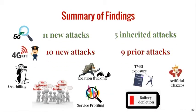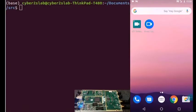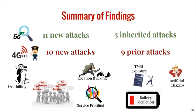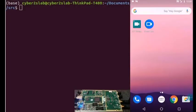With this adversarial testing framework, we identified 11 new attacks and 5 inherited attacks for 5G networks. A previous version called 4G-LTE Inspector identified 10 new attacks and 9 prior attacks for 4G networks. Attack implications range from eavesdropping, location tracking, IMSI and TMSI exposure, artificial denial of service, and service profiling. The adversary can exploit these cellular network protocol vulnerabilities to send fake emergency alert messages.